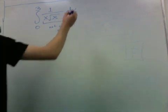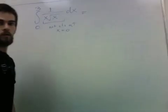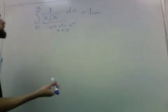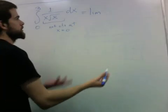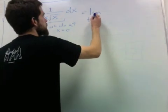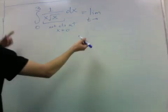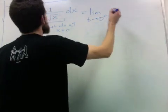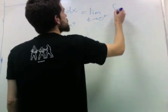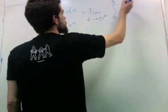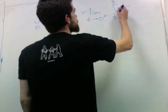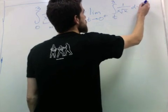And this function is not continuous at x equals 0 because it goes to infinity there. So the way we try to get around that is we define this as a limit. Just like before, now we approach the bad point as opposed to approaching infinity. We go say t goes to 0 from the right, so we're integrating from t to 3 of this.